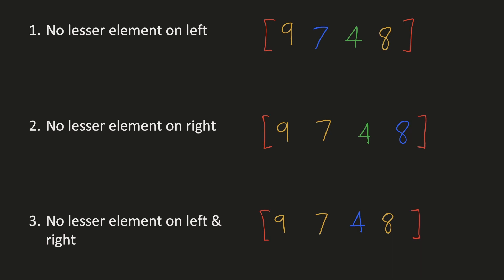With our previous approach, there can be 3 corner cases we have to handle. In our first example, let's look at 7. It has a smaller element on the right but does not have a smaller element on the left. Ideally, there should be two elements on the left for which 7 is the minimum. If we assume there is a minus infinity at the start of the array, it can be considered as the previous smaller element. The difference in their indices will be 2, which is what we want. Hence, by adding a minus infinity at the left, we can avoid this edge condition.